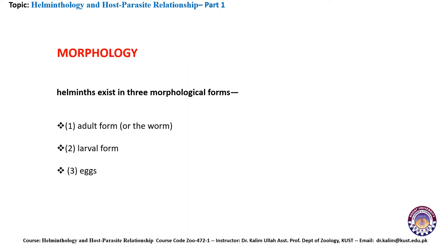The morphology of the helminths: helminths exist in three major morphological forms. Number one is the adult form, also called the worm. Number two is the larval form. Number three is the egg form.